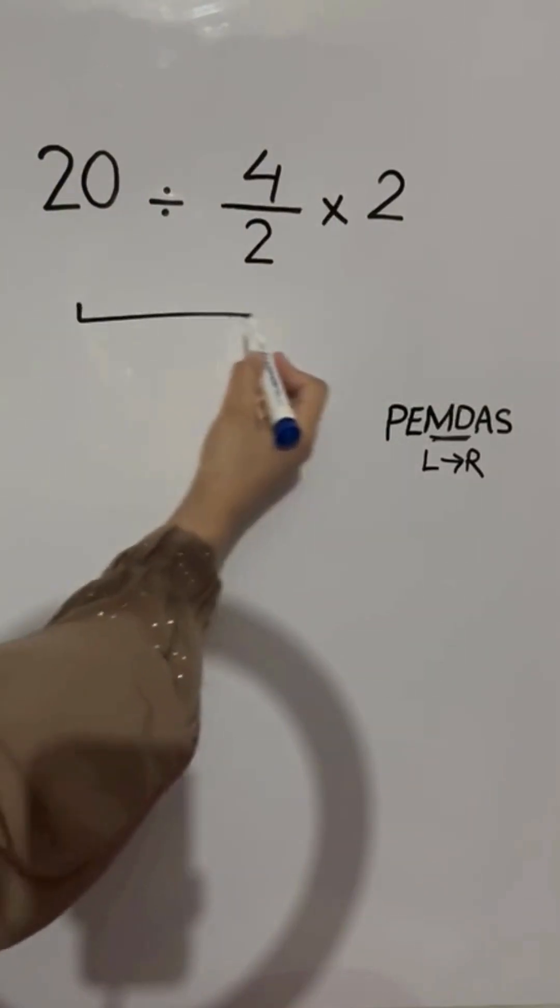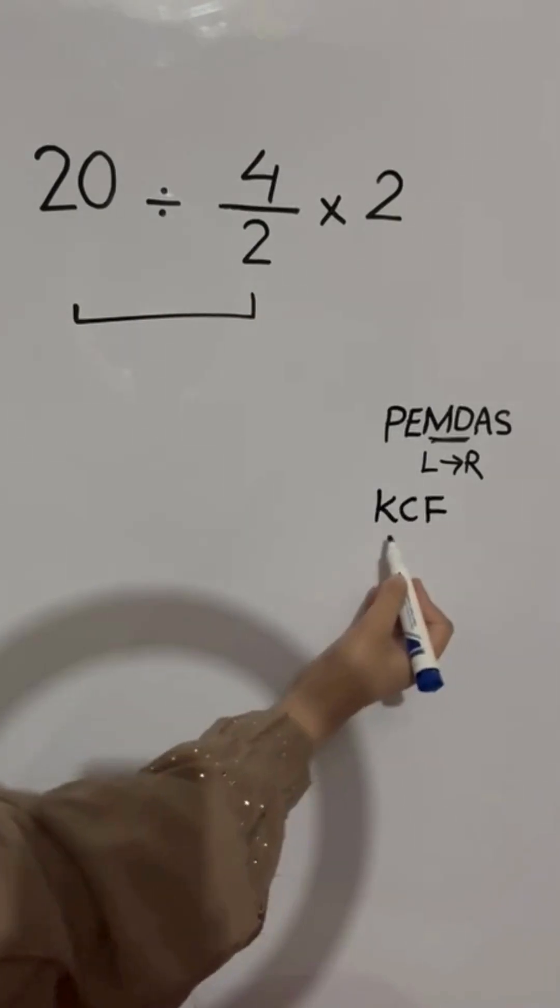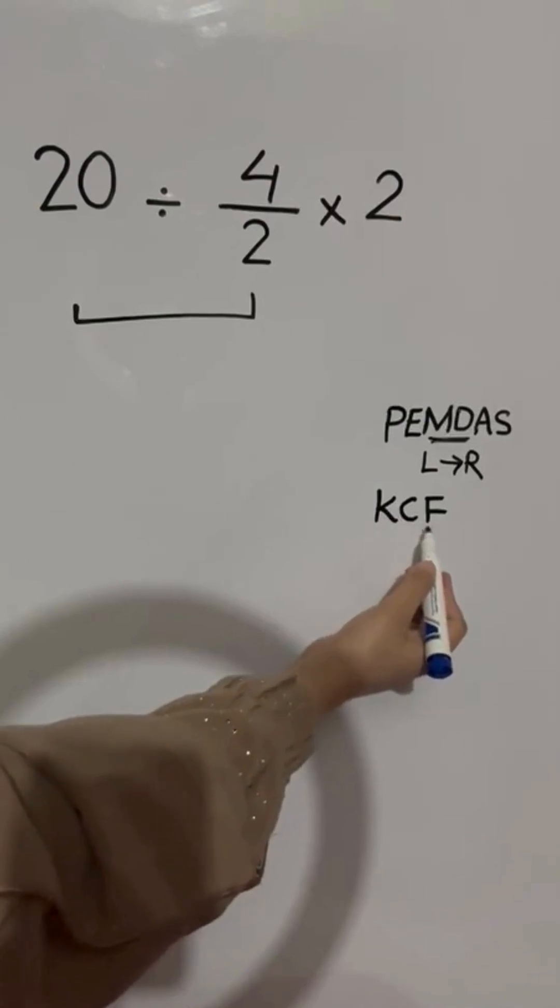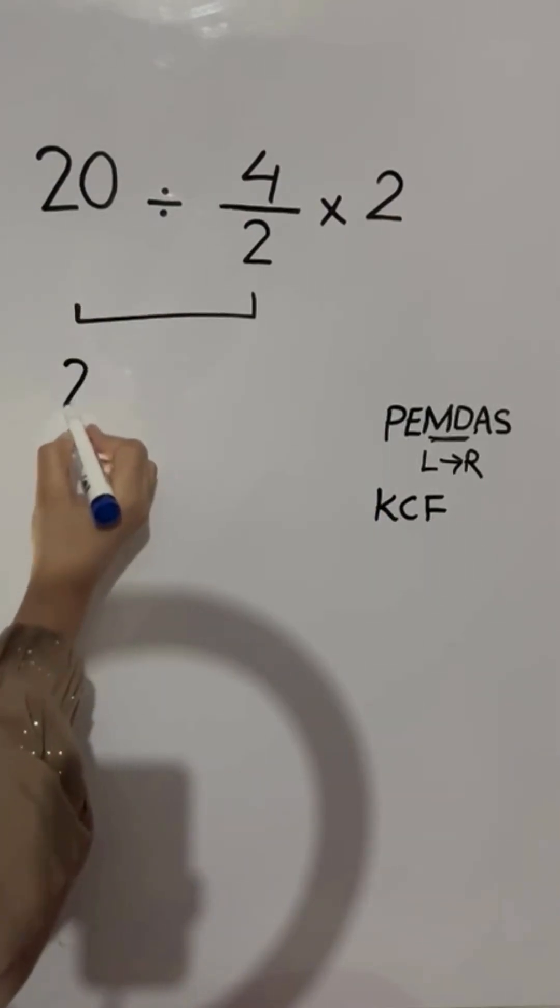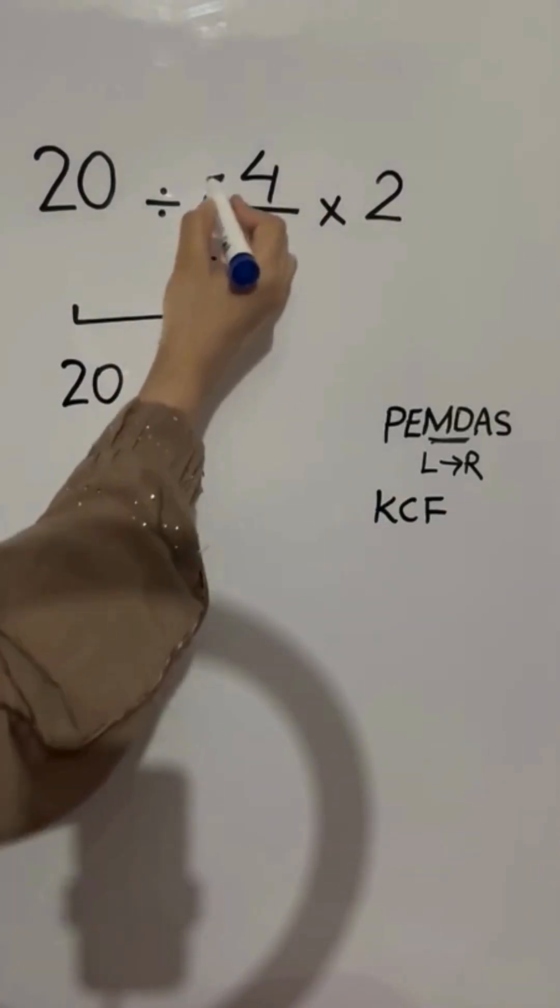First 20 divided by 4 over 2. According to the KCF rule, K stands for keep, C stands for change, and F stands for flip. Keep the first fraction, change division to multiplication, and flip the second fraction.